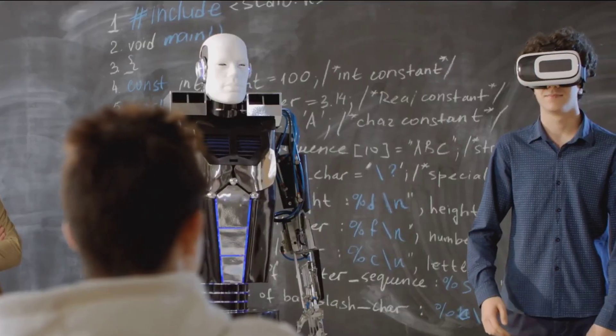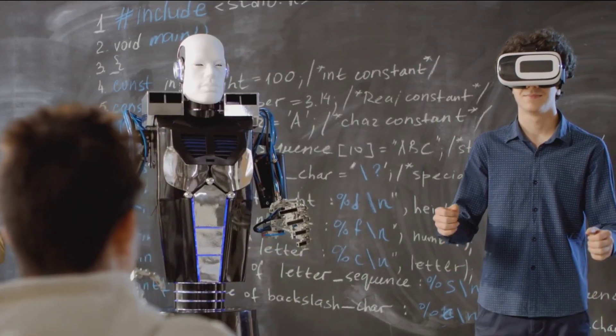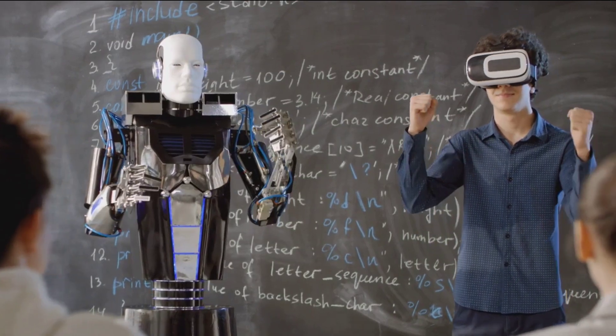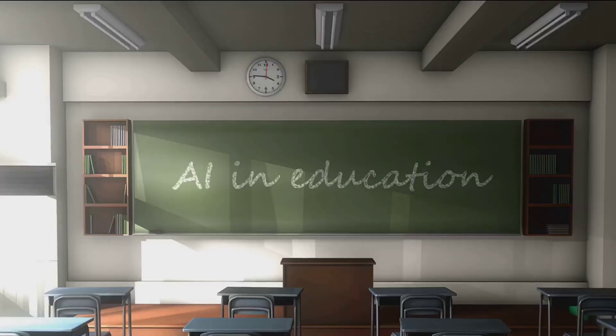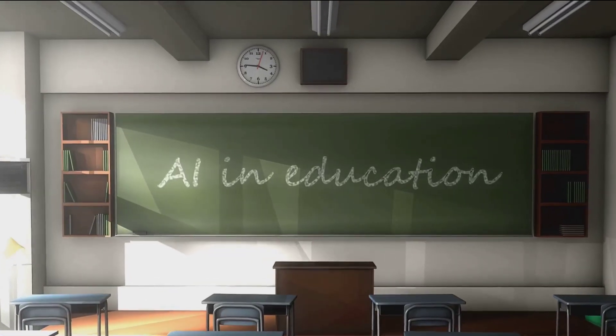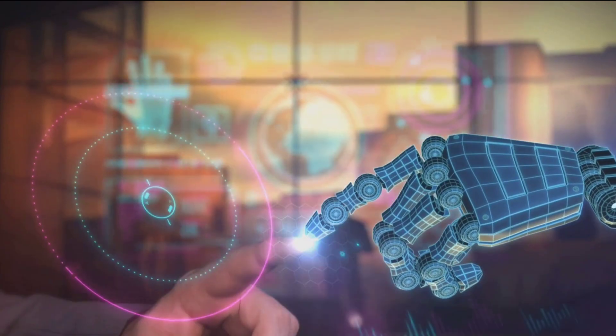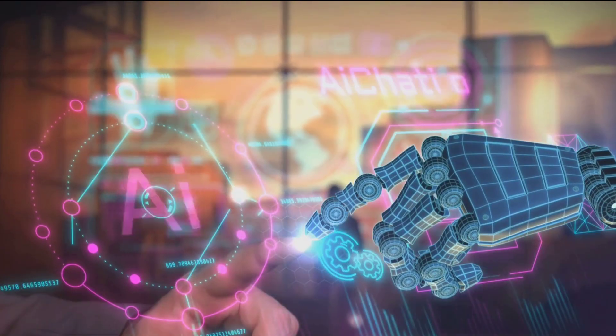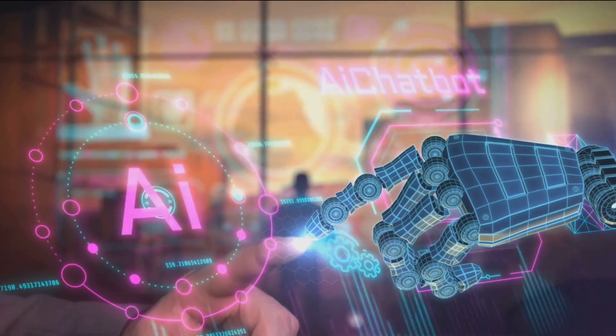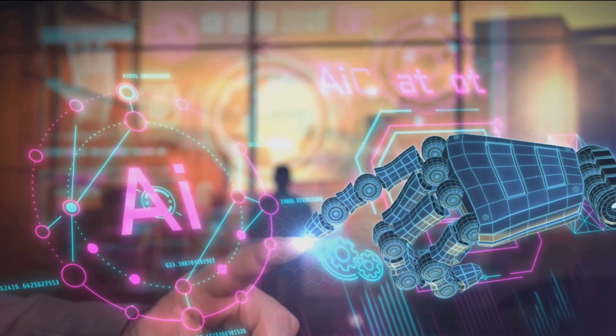Moreover, as AI continues to evolve, we as a society will need to adapt as well. This means rethinking our education systems to prepare our children for a world where they'll be working alongside AI. It means redefining our understanding of work as AI takes over more and more tasks. It means grappling with complex ethical questions about what it means to be human in a world where AI can mimic human behavior so closely.